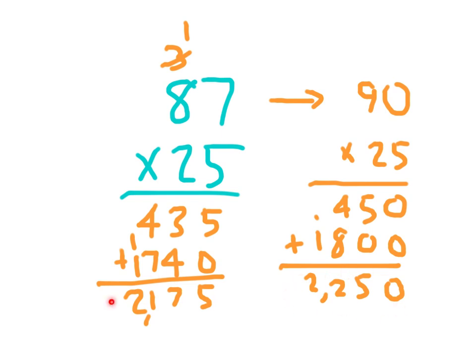This makes sense that our estimated product is larger than our exact answer. In that, we went up from 87 to 90. In fact, we went up 3. And 3 times 25 is 75. And that's why our answers are actually 75 away from each other.